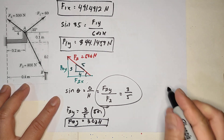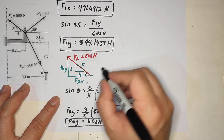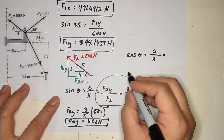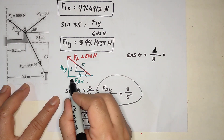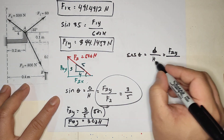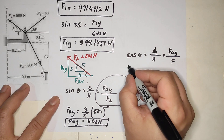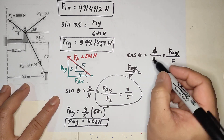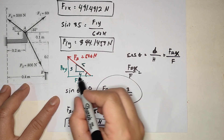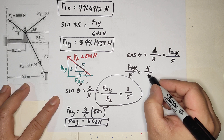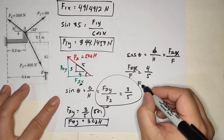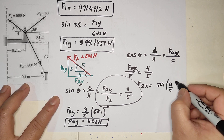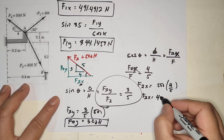For F2x, cosine theta equals adjacent over hypotenuse. The adjacent is F2x over F2. From the small triangle, adjacent is 4 over 5. So F2x equals 4 over 5 times 500, which gives F2x equals 400 Newton. So you now have the components of F2.